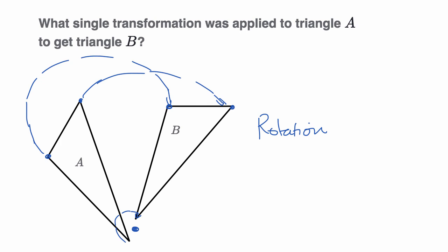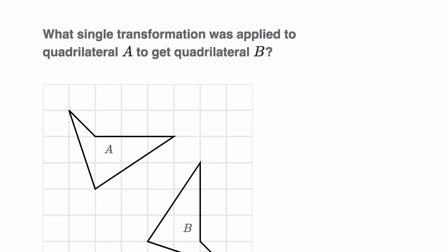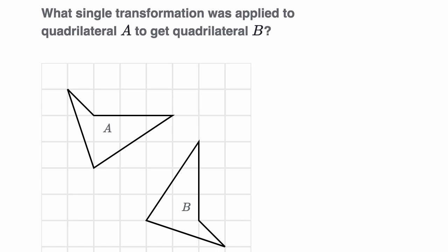Let's do another example. What single transformation was applied to quadrilateral A to get to quadrilateral B? So let's see. It looks like this point corresponds to that point, and then this point corresponds to that point, and that point corresponds to that point.